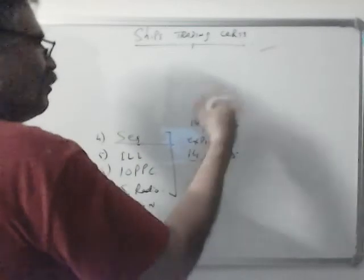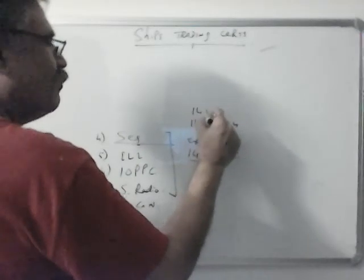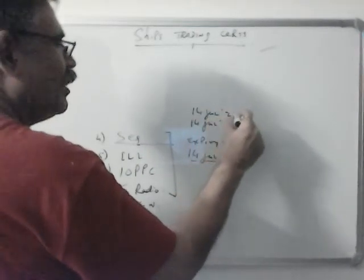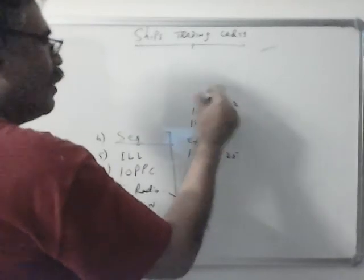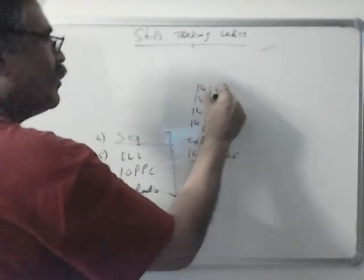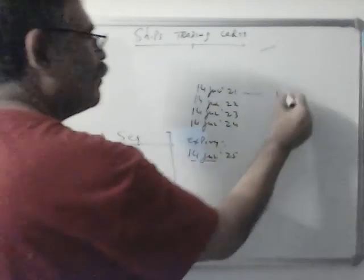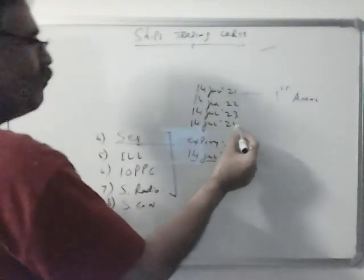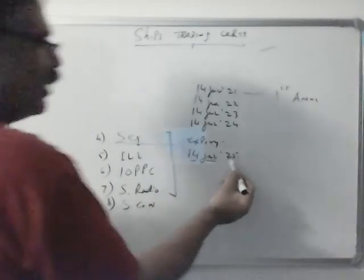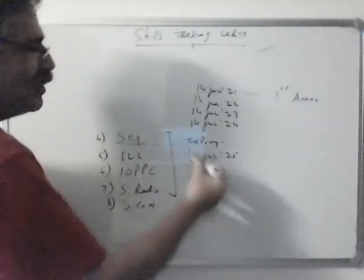This is the fourth annual. Before that, you will have another annual on 14 July 23, another on 14 July 22, and the first annual will be on 14 July 21. So: first annual, second annual, third annual, fourth annual, and then renewal. You will get a new certificate around this date.